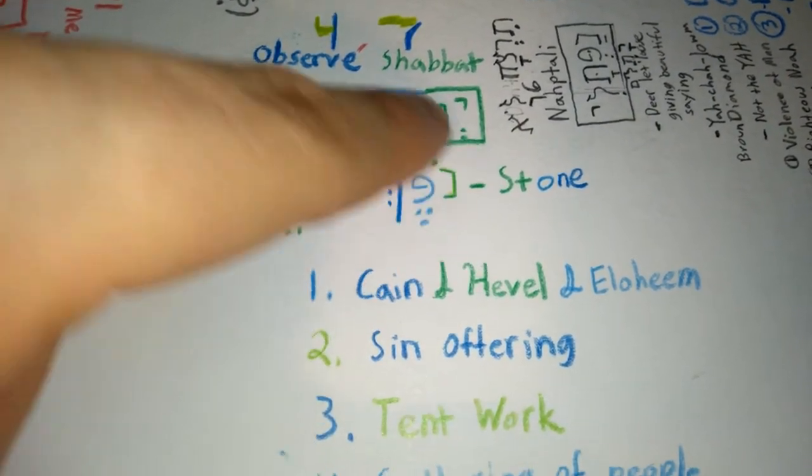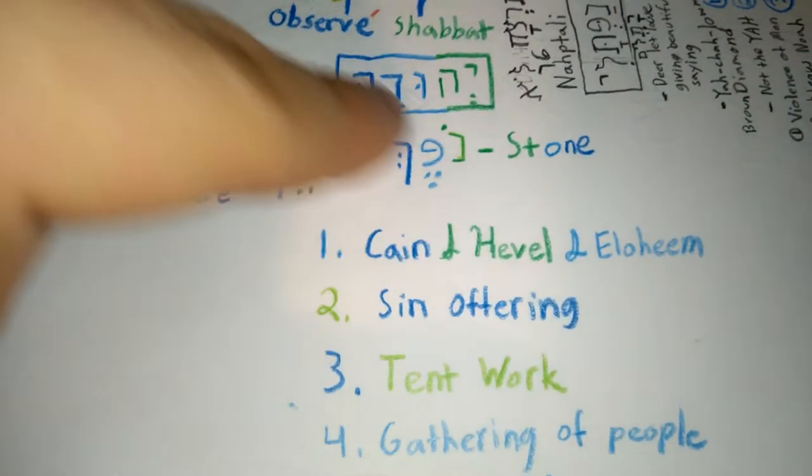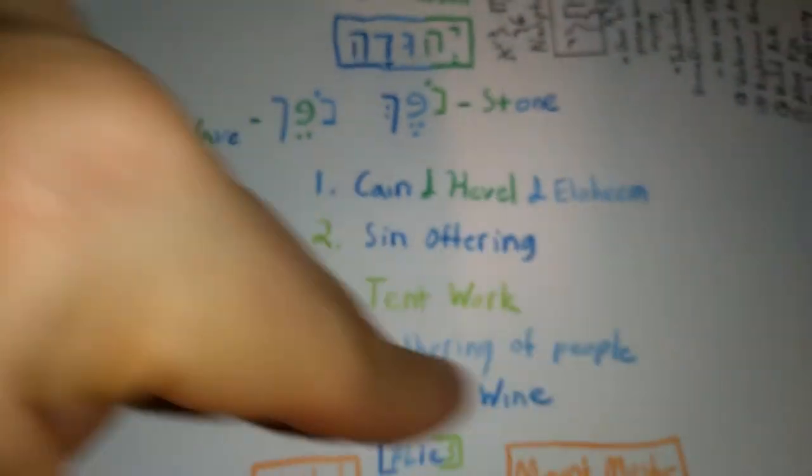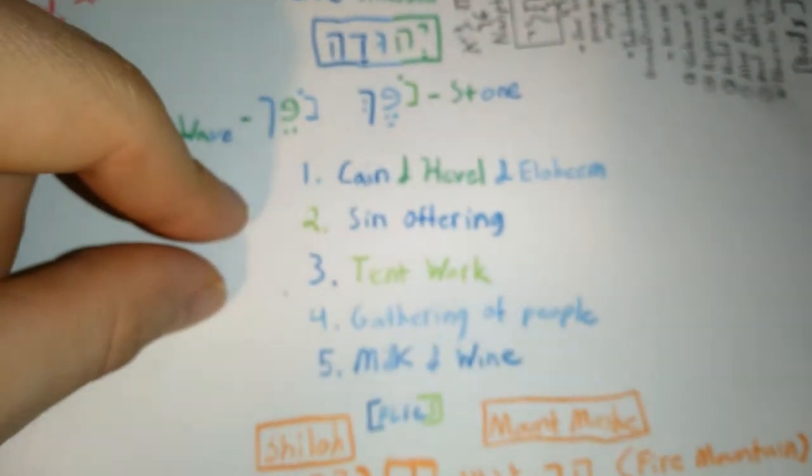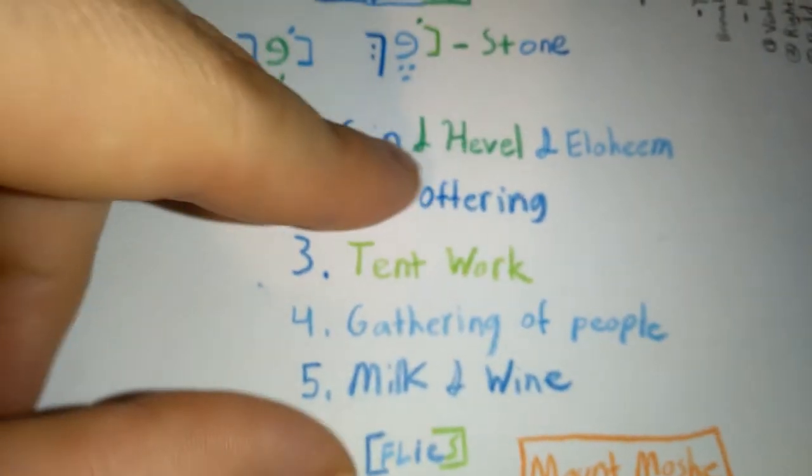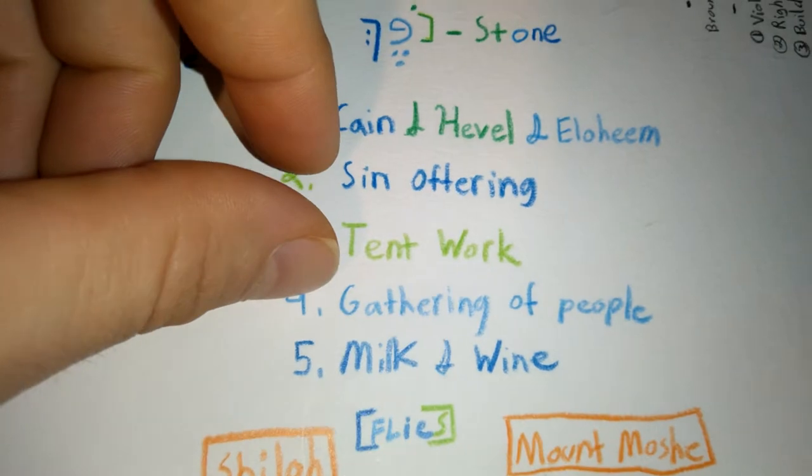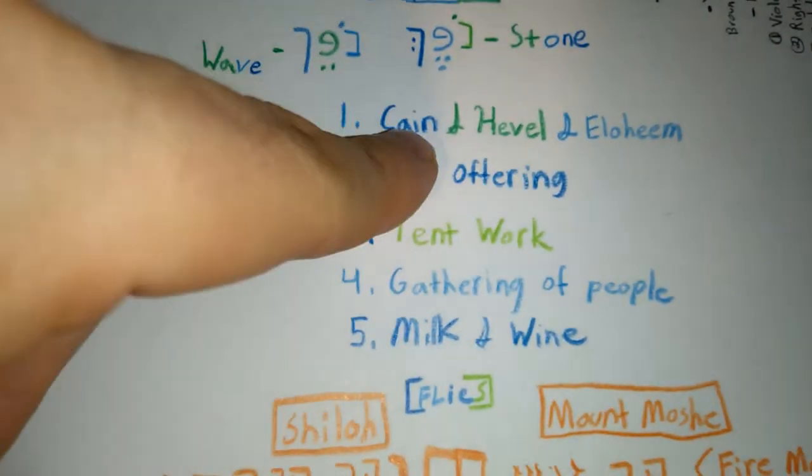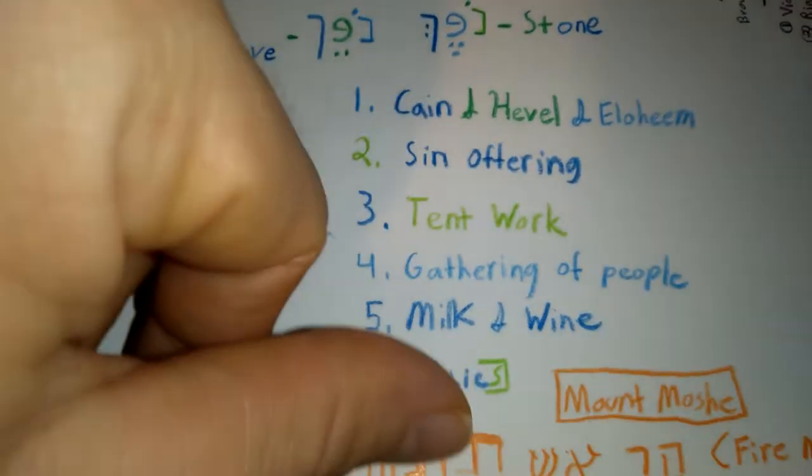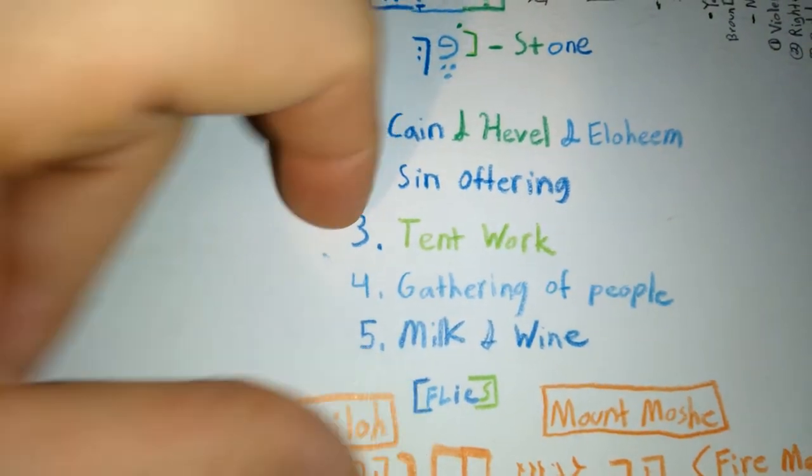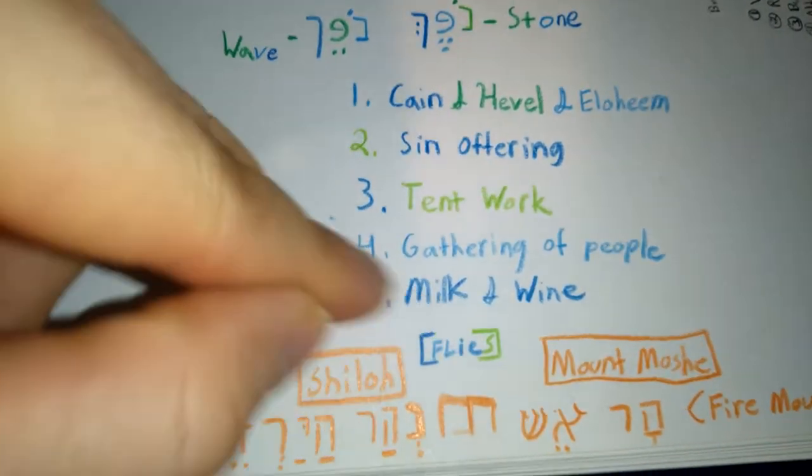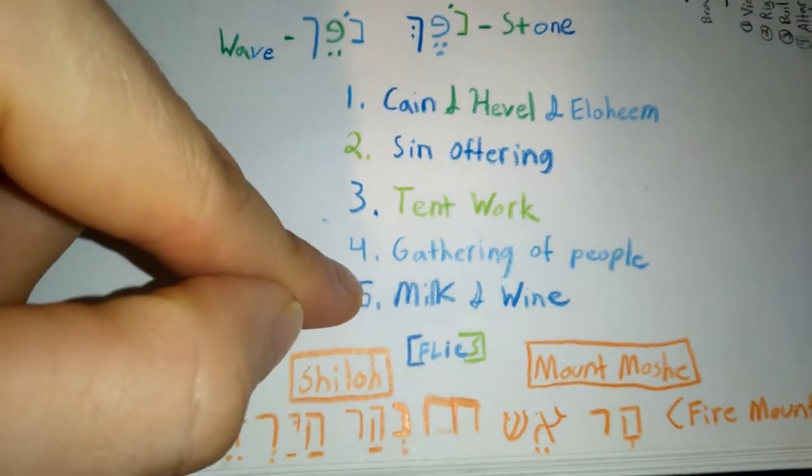And it's got kind of like a light green, light blue, light dark blue. You have Cain and Hevel and Elohim in the garden. Not necessarily in a garden garden, but in a nice place. And Elohim had to confront Cain because Cain got Hevel out and moffet it in. And obviously it correlates to the sin offering. And tent work, gathering of people, milk and wine.